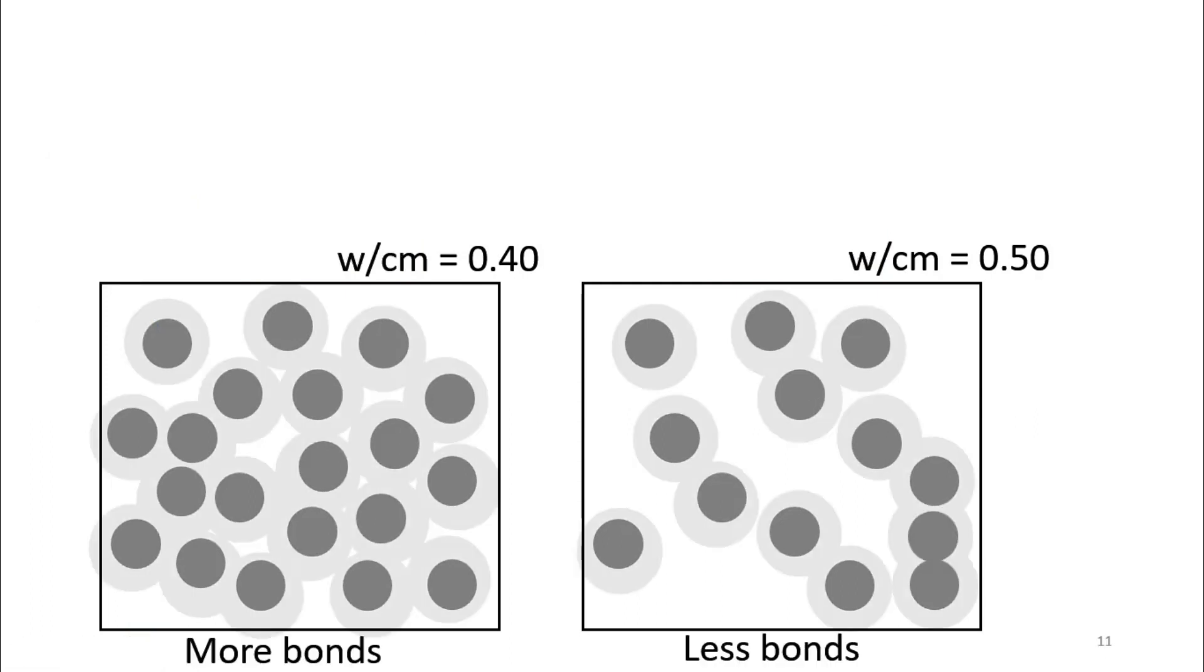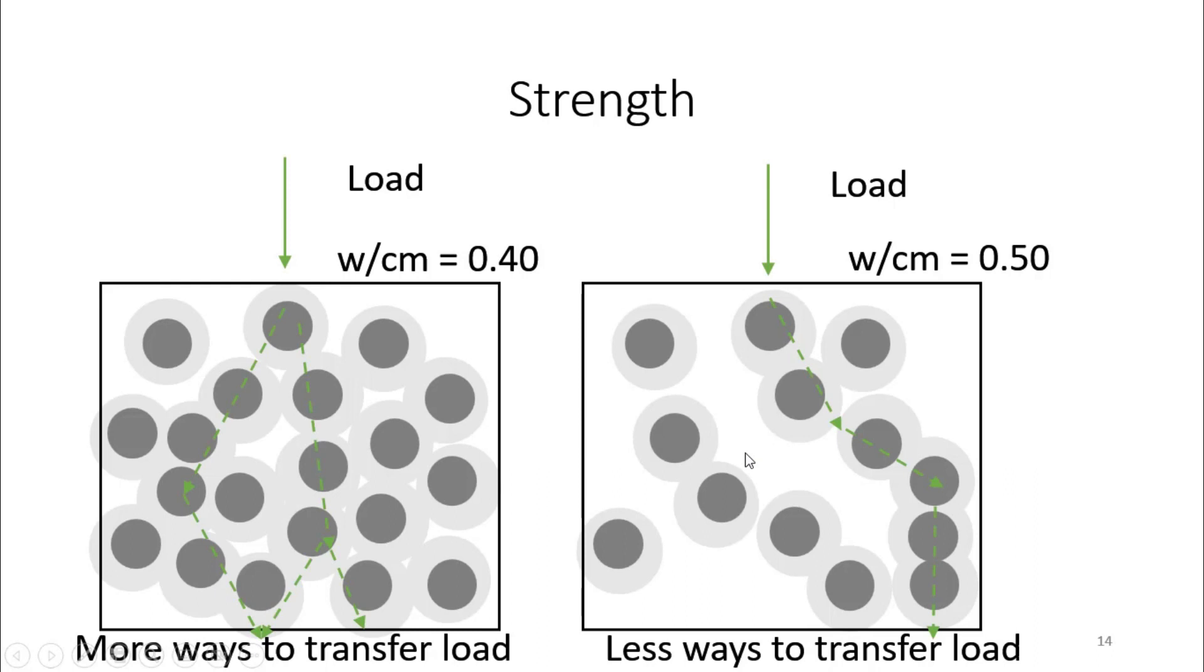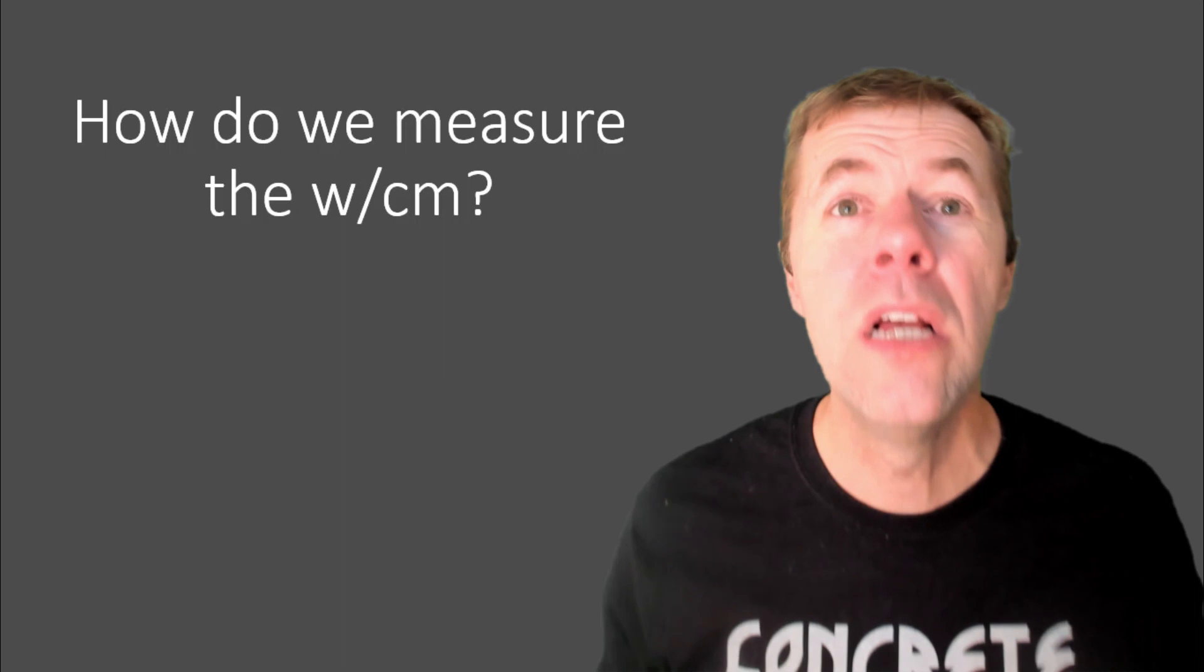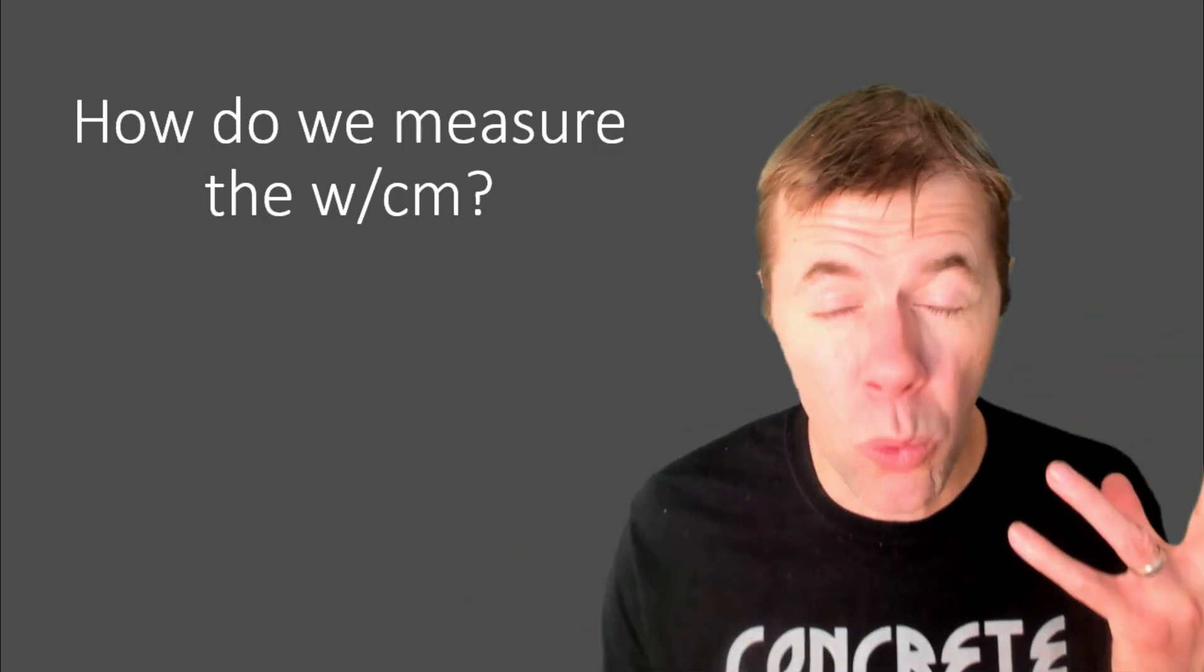Why does this matter? Once concrete starts to hydrate, it forms these little hydration products around each one of these particles. Then, as they join together, we get more bonds on the left than we do on the right. Why does that matter? When you go to load your concrete, there's more places for the load to go on the left than there is on the right. Therefore it's stronger. Have water trying to penetrate inside the concrete? It cannot penetrate on the left, and it can on the right.